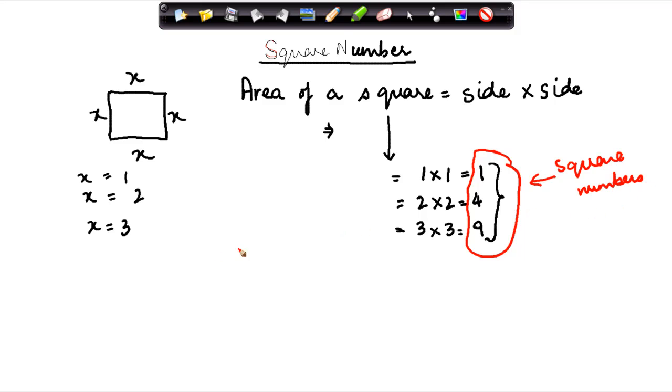Now by definition, a square number is a natural number. Please note, square number is a natural number. Now what are natural numbers? Natural numbers are basically 1, 2, 3, 4. These are natural numbers, correct.